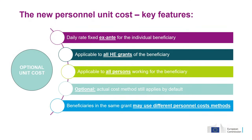So, first of all, it's important to note that this is completely optional, which means that the actual costs are still the default method. This is a decision entirely at the individual beneficiary level. Within the same grant, with the same consortium, you can have very different methods — you can have just one using personnel unit costs and the other participants using actual costs. It's really at the individual beneficiary level.